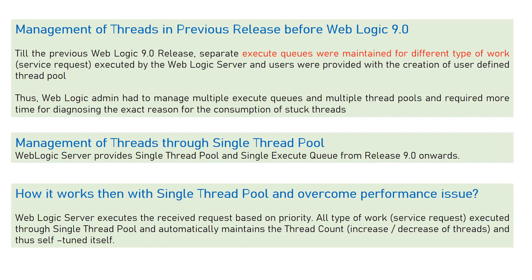There could be a question: if there is a single execute queue, how will performance work? There is a possibility that performance could degrade with a single queue handling both internal and external requests. For that, the WebLogic server automatically prioritizes requests as well. It is a self-tuning thread pool that always prioritizes requests from external clients versus internal requests, deciding automatically based on experience.